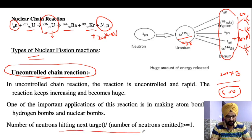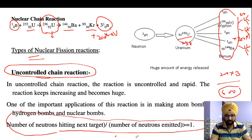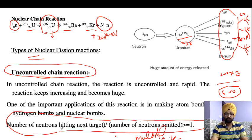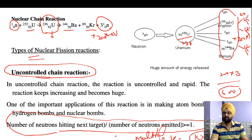That brings us to the multiplication factor. The multiplication factor is defined as the number of neutrons hitting the next uranium atom divided by the number of neutrons being emitted. If this factor exceeds greater than 1, the neutrons cannot be controlled.